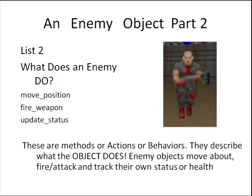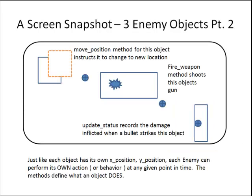So when I blast it through the gut, it dies. The methods or actions describe what an object does — this is the executable code that will move the object or initiate an attack. And since we are trying to kill it, it must track its own status, degrading as it takes damage and eventually dying.